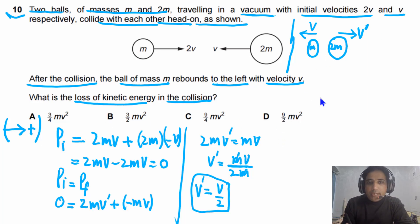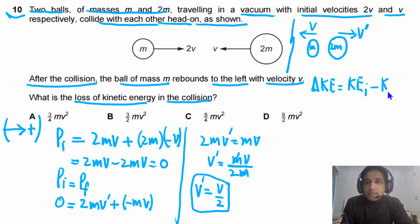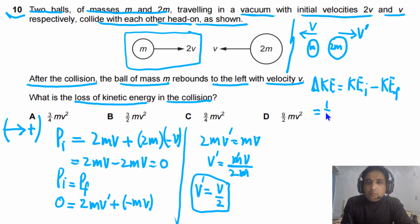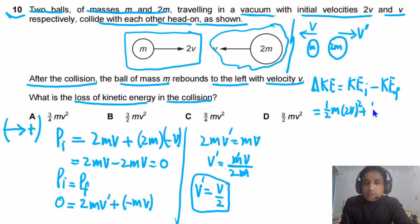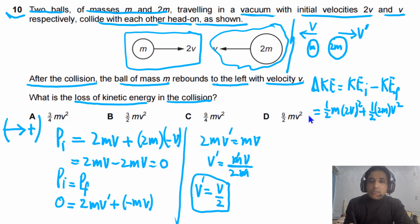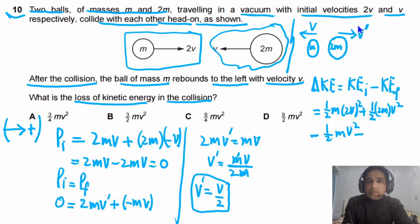Now we need to calculate the loss of kinetic energy: delta KE equals initial KE minus final KE. Initial KE is one-half m times (2v)² plus one-half times 2m times v². Final KE is one-half m times v² minus one-half times 2m times (v/2)². Mass of the second ball is 2m and its speed after collision is v/2.